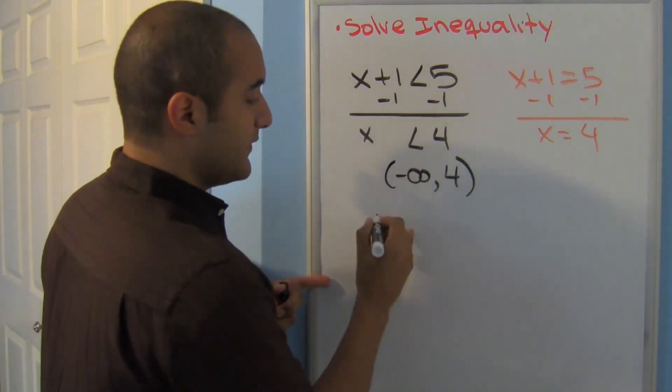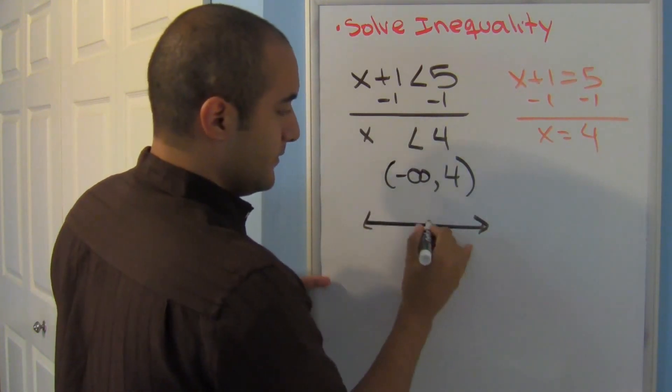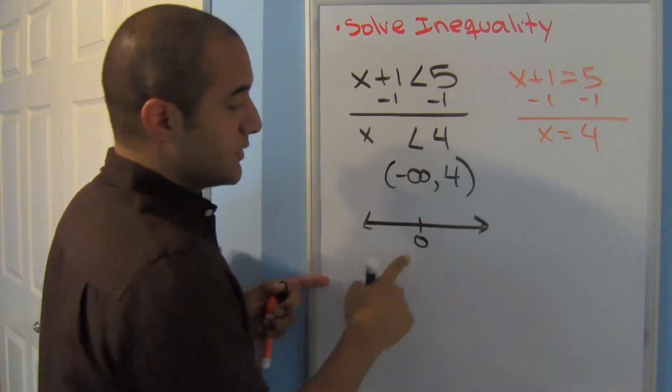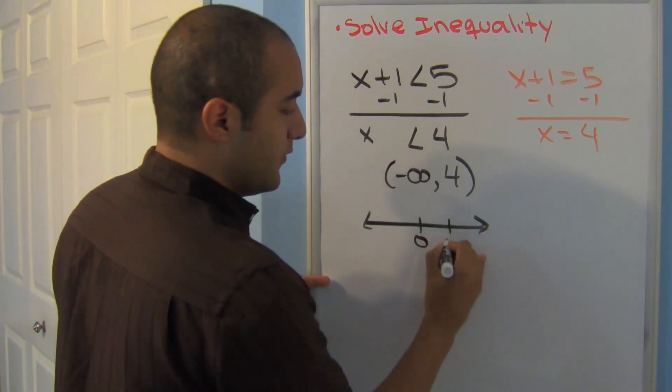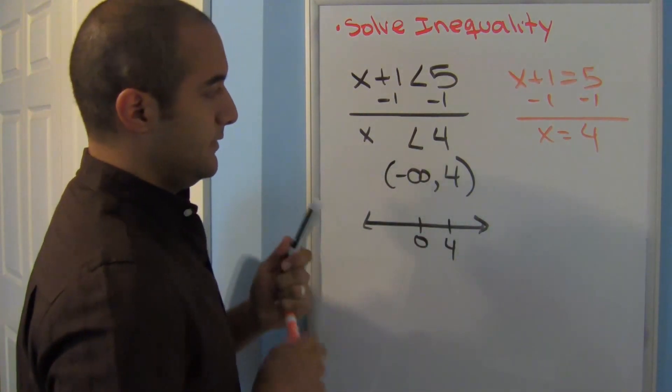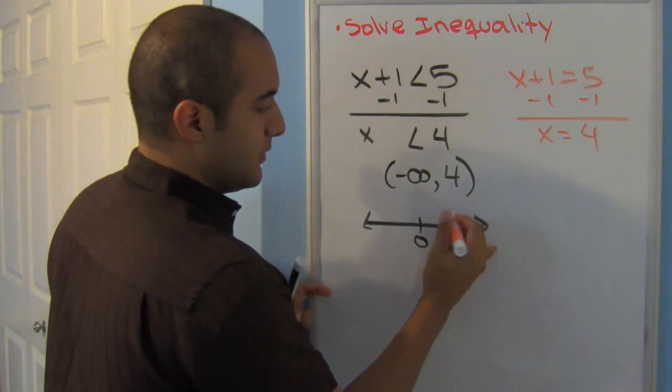And if we graph that, I always show 0, I'm showing 0, I show 4, and now I'll just do my parentheses and I shade left there.